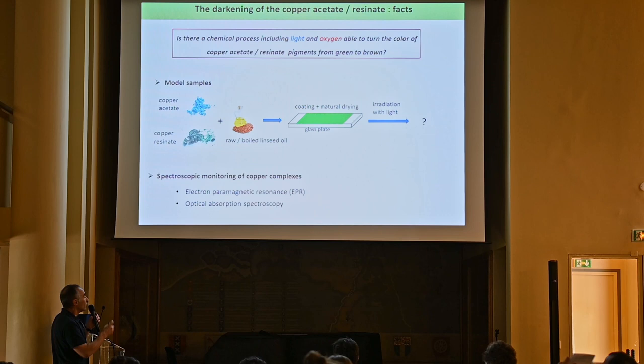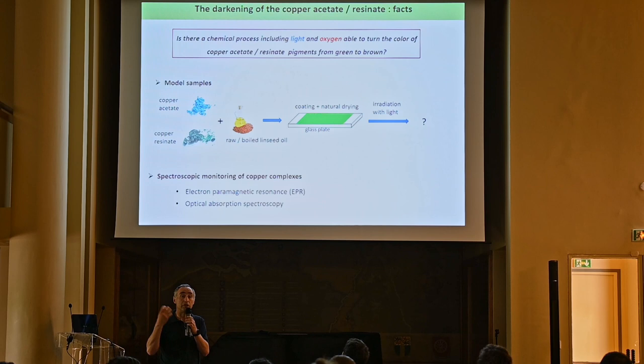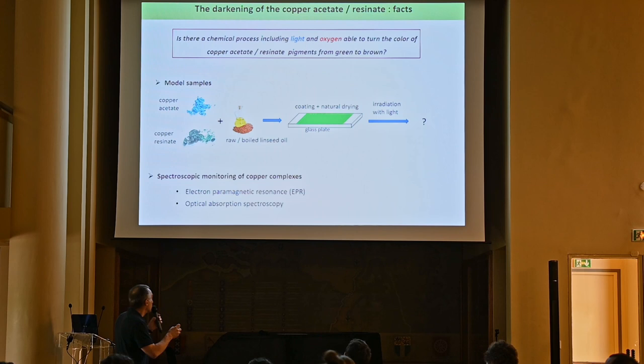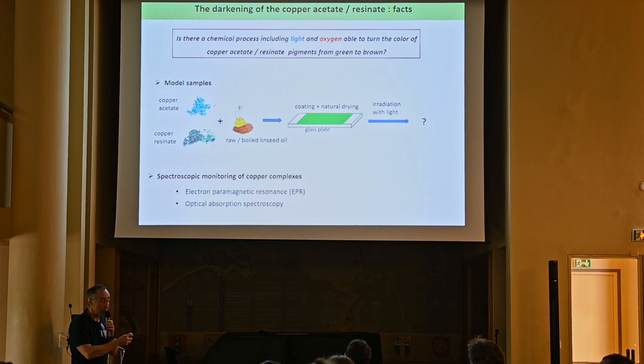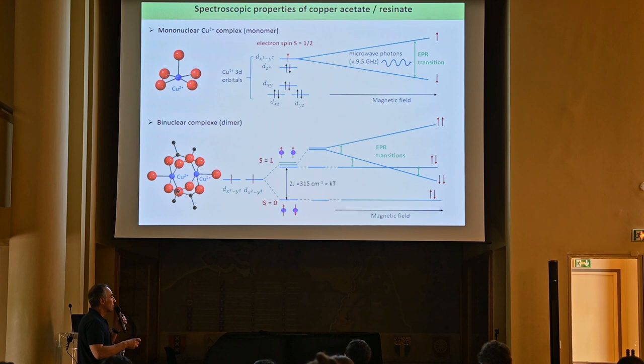The advantage of these copper complexes is that because they are colored complexes they have optical properties, but also they have magnetic properties — they are paramagnetic species. So we can use both electron paramagnetic resonance (EPR) and optical absorption spectroscopy, which are very selective and sensitive techniques to any chemical changes in the structure about the copper ions.